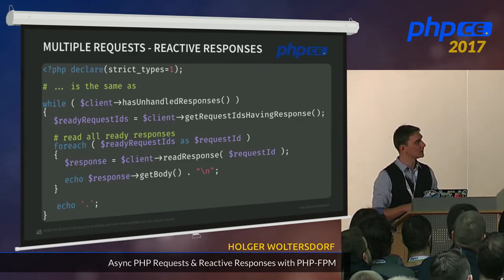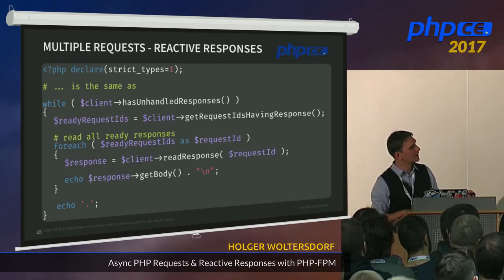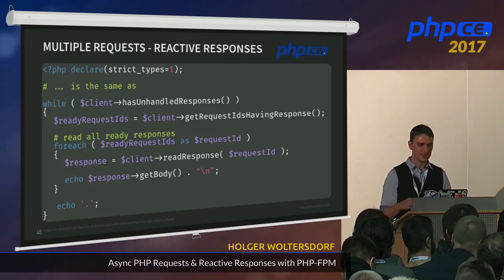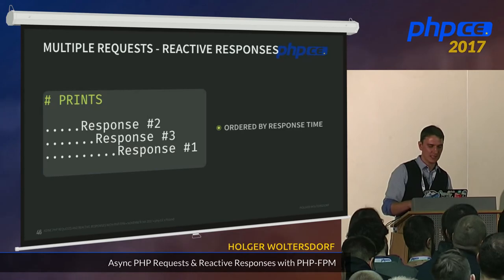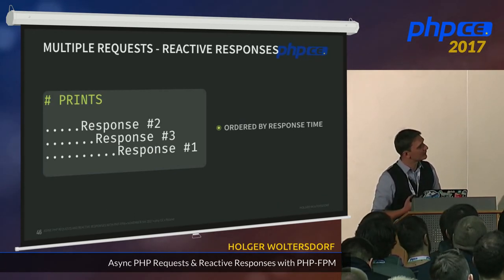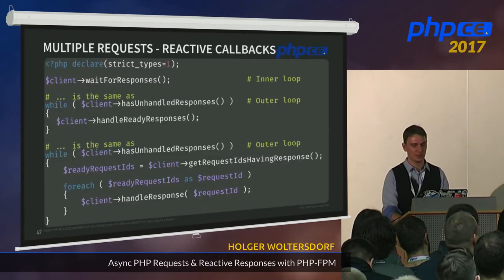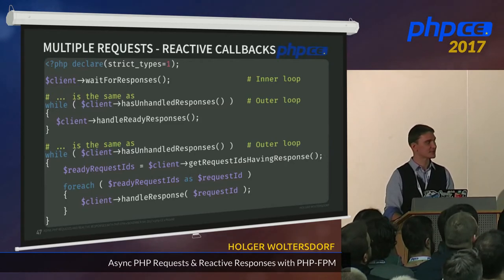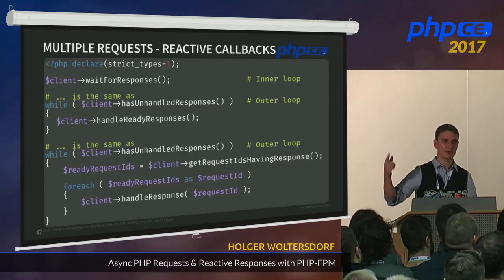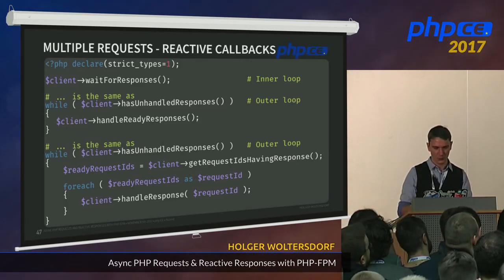What you can do instead is send a lot of requests and ask for all responses that are ready. There's an inner and outer loop implementation: you loop until there are no unhandled responses, fetch all request IDs that have responses, and read each response. The result would be ordered by response time — so response 2 (fastest), then response 3, then response 1 (slowest). You can use the inner loop variant by just saying 'wait for all responses' and your response callbacks will be called as soon as each response arrives.